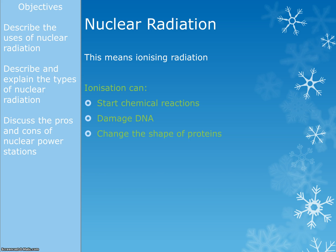If you remember from way back in chemistry, when we were talking about how heating foods or meats can change the shape of proteins and denature them, ionising radiation does something very similar. The ionising radiation can change the shape of a protein, which means it can't do its job anymore. So that's what we mean by ionising radiation.